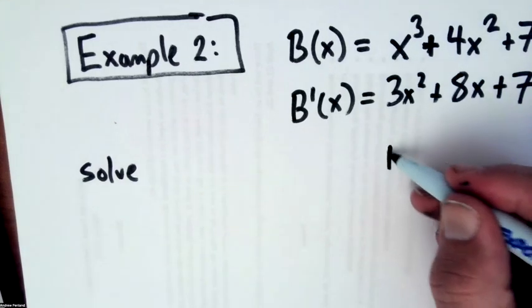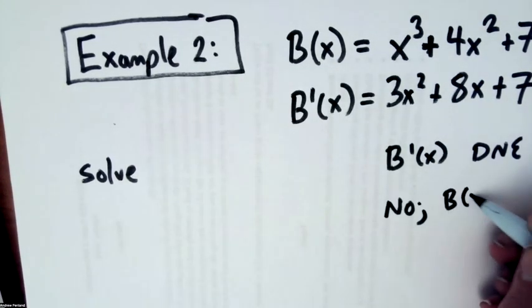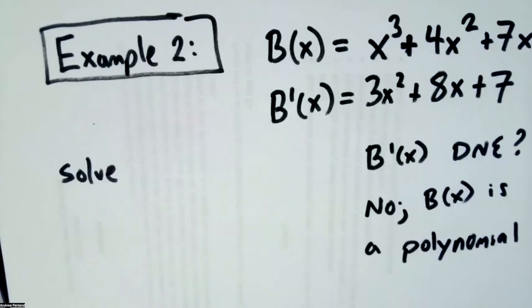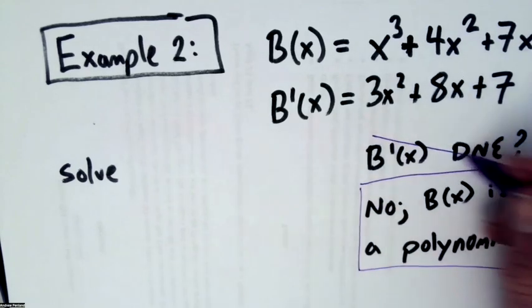So first of all, is there anywhere that B prime of x does not exist? And B of x is a polynomial. So that's an important fact to carry forward. But I don't even have to worry about this situation.